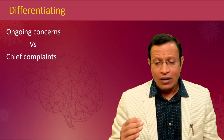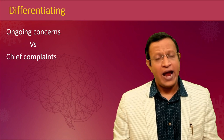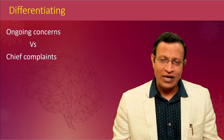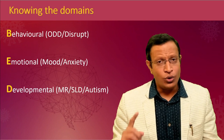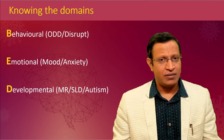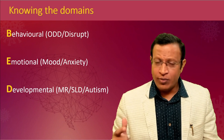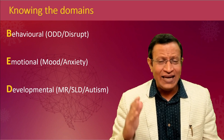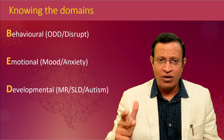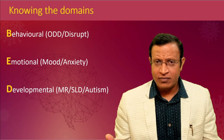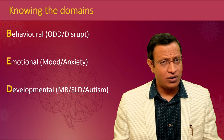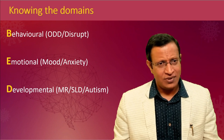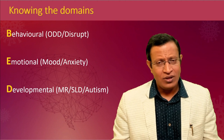Allow family members to express their concerns, and delineate which are concerns versus complaints that made them seek help. You should also know which domain the child's problems fall in. It is easy to remember BED: behavioral, emotional, developmental. Behavioral includes ODD and conduct disorder; emotional includes mood disorder, depression, and anxiety disorder; developmental includes mental retardation, specific learning disorder, and autism. Roughly identify which category applies.